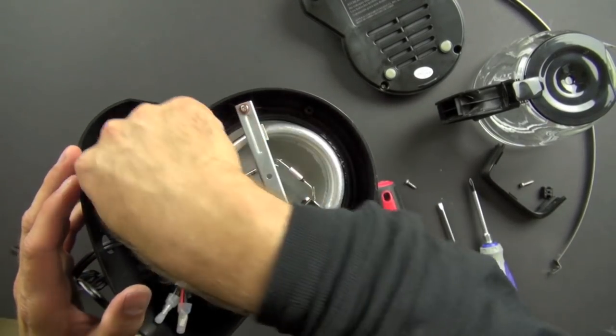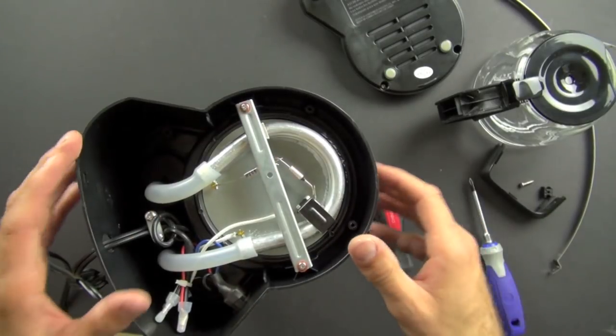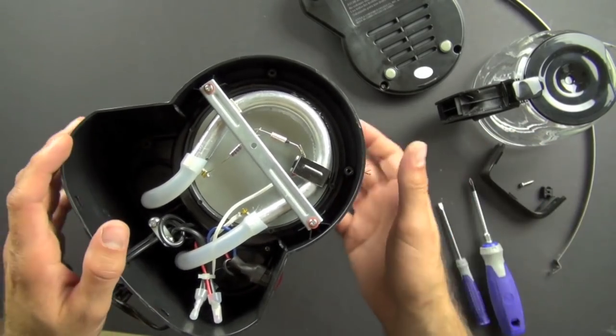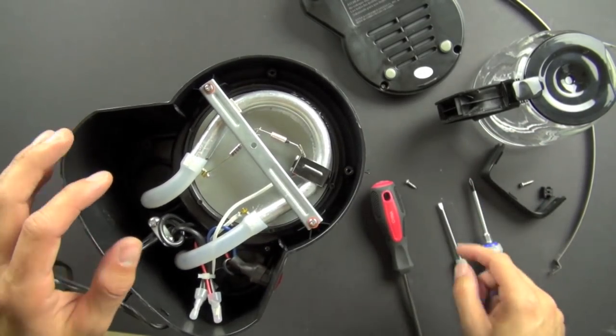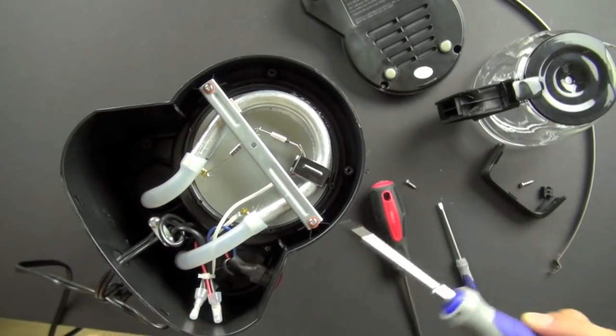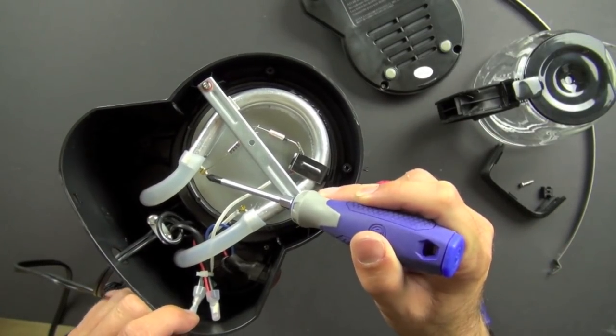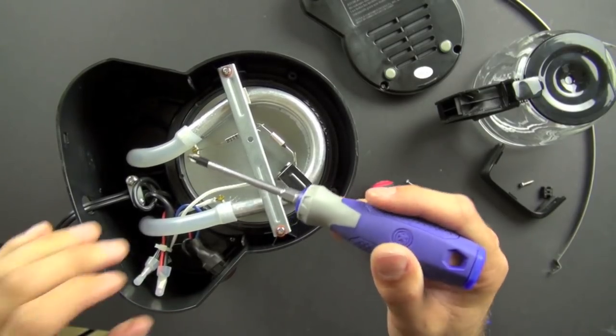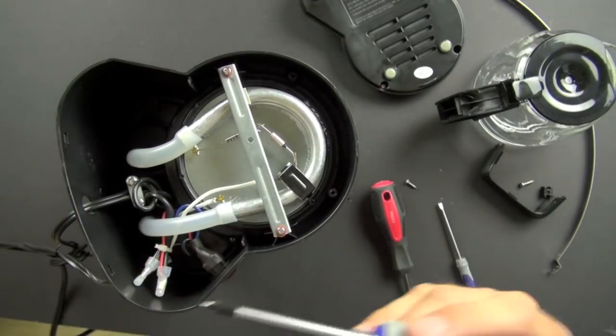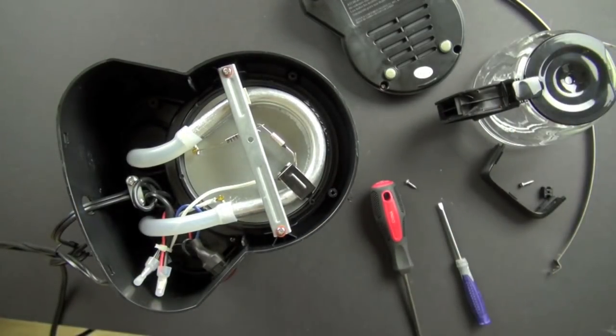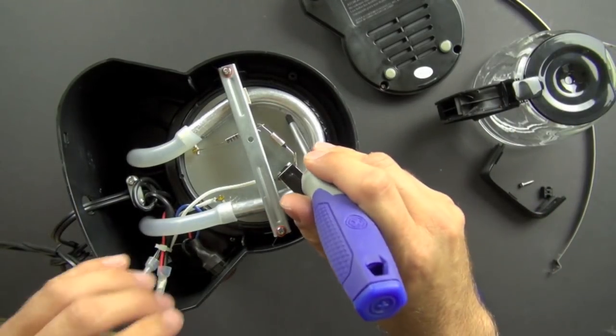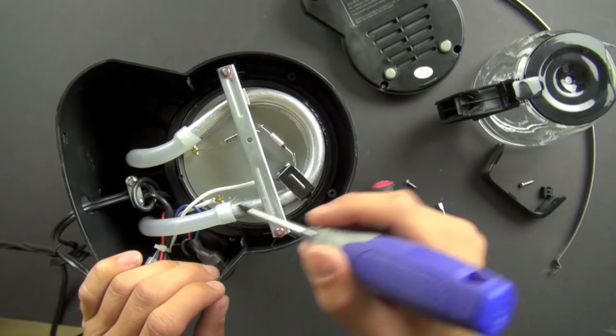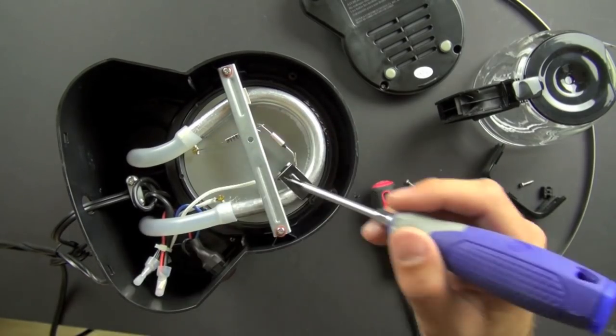But it also heats up the plate, this plate right here. And so the way it does that is it uses a material called nicrom wire, which is an alloy of nickel and chrome and it heats up really easily and it's a good resistor. And so when it heats up, the aluminum is also an excellent conductor of heat. So it conducts heat very well into the plate and also into the water that's inside of it.